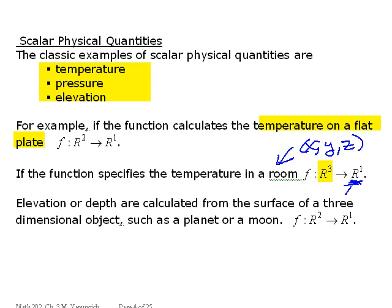Elevation or depth are usually calculated from the surface of a three-dimensional object. So they are mapping R2 into R1. And R1 would be the value of the elevation at some point x, y. And that x, y could be latitude and longitude, for example.